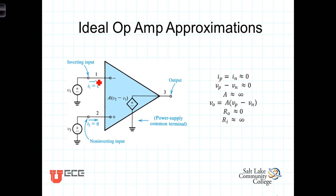Along with that is the idea that the input resistance seen looking into either of these terminals is infinite. If you have an infinite input resistance, no matter what the voltage is, there will be no current going in. So the second ideal op-amp approximation is that the input resistance to both terminals is infinite, and the current going into those terminals is zero.